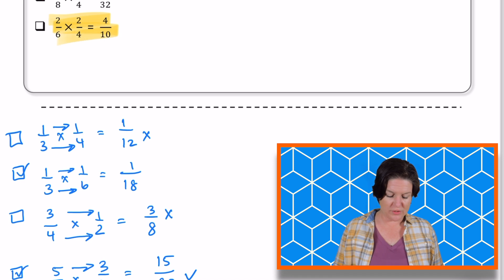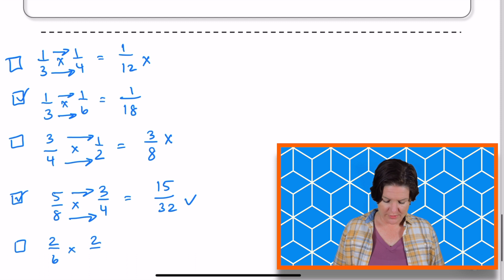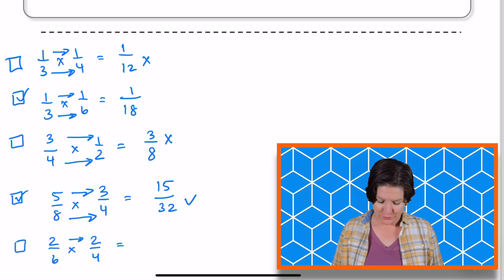And our last one is two sixths times two fourths. Let's see if that is four tenths. Two sixths times two fourths. Two times two equals what? Four.